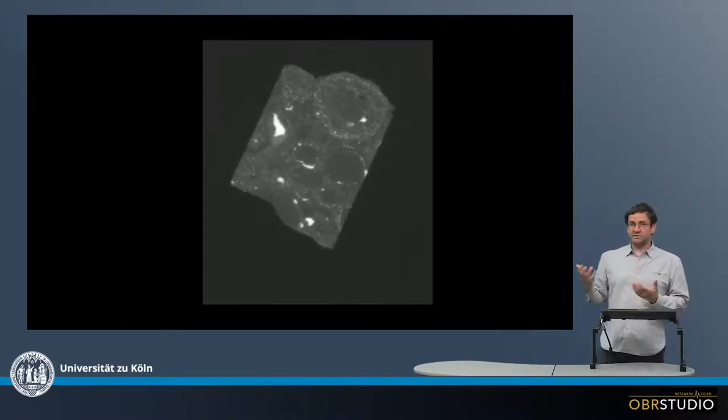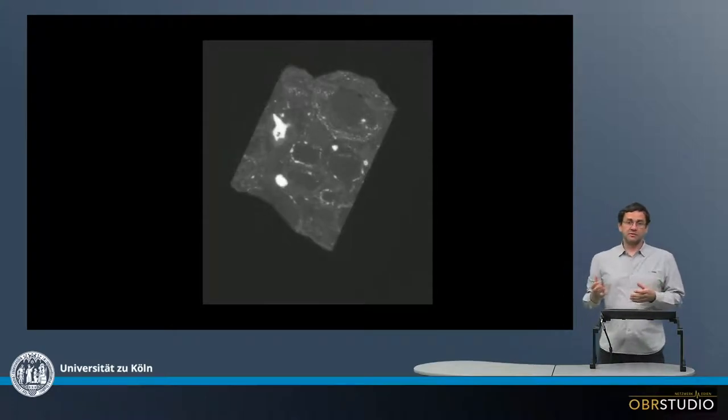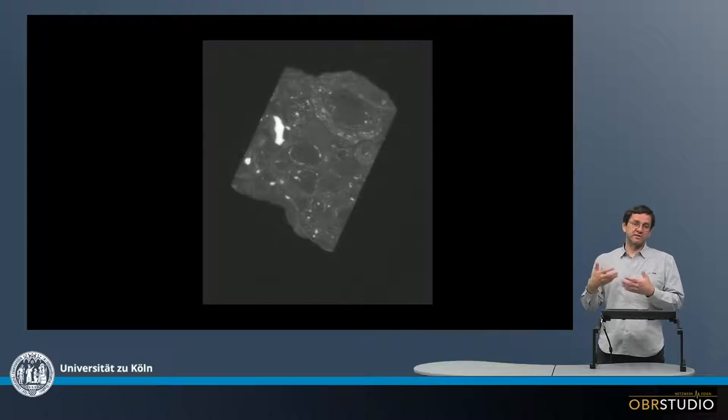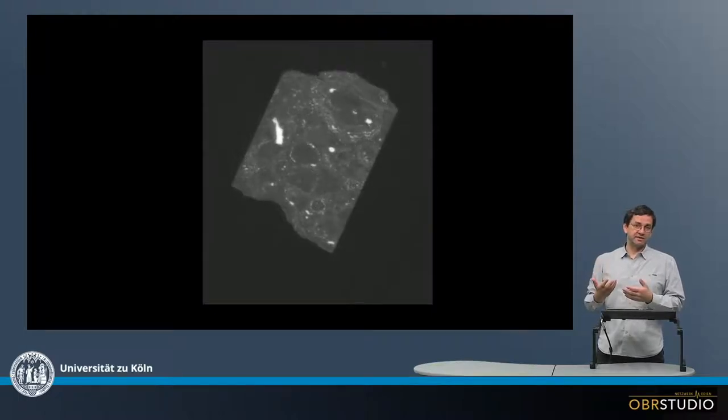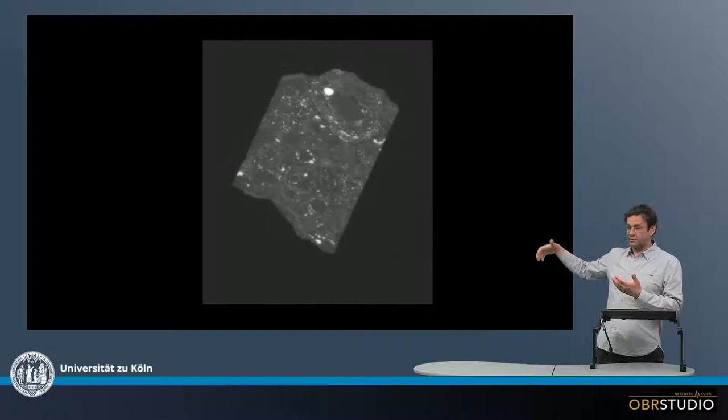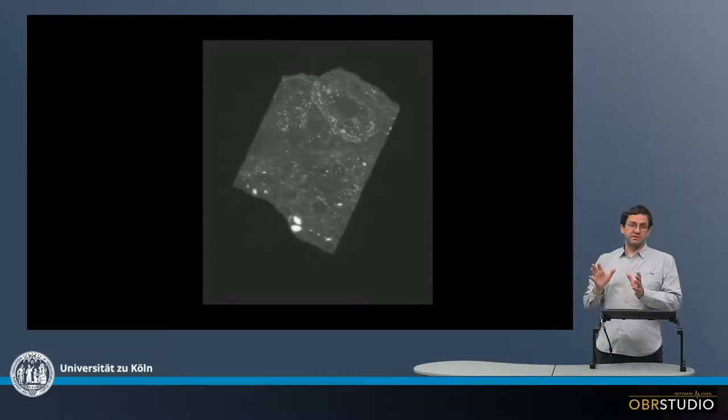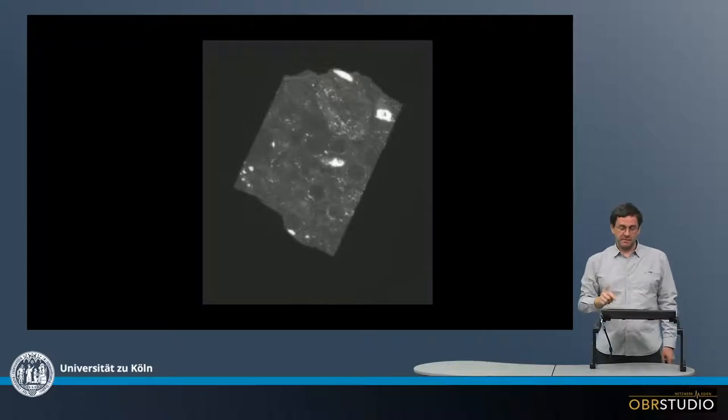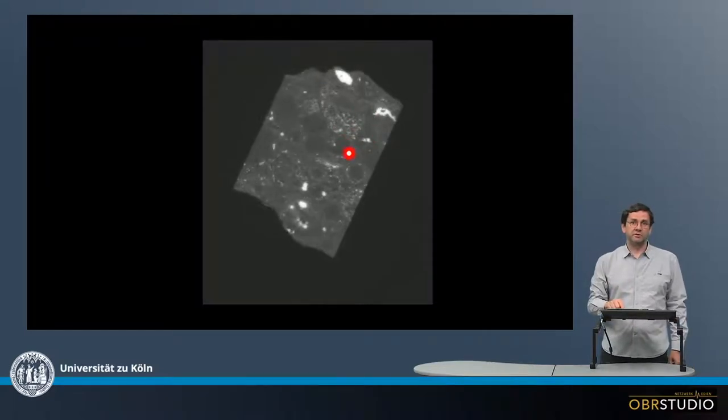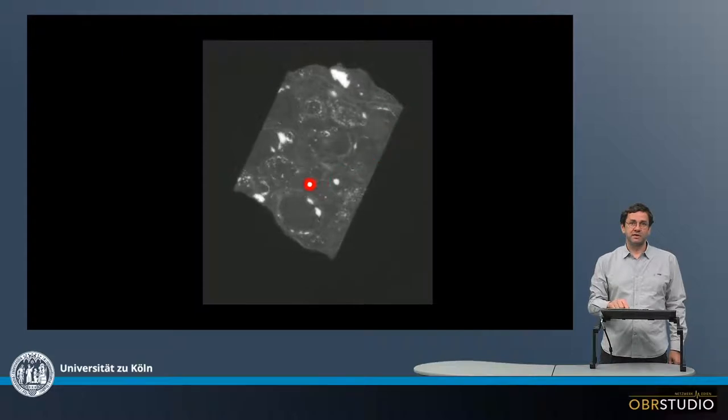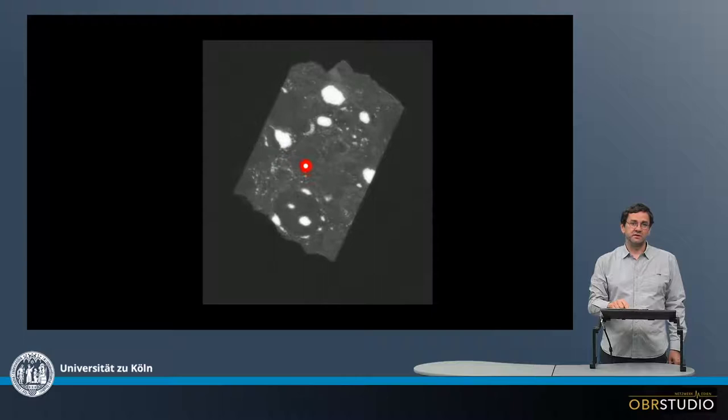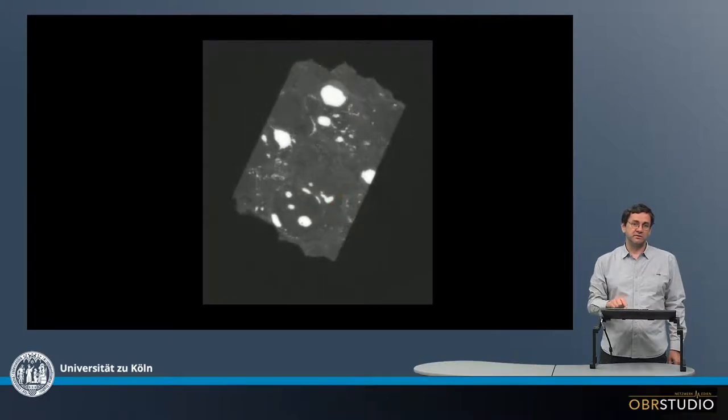What we get is a density contrast image. Opaque phases absorb more X-rays than silicates because they are denser. Then everything is inverted and the image here looks a bit like a backscatter electron image. This means metal, for example over here, is all bright. The round structures here are the chondrules, the individual ones, and in between the chondrules is the matrix.